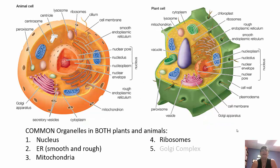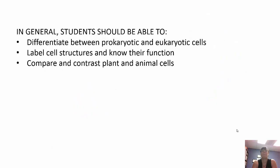Both plant and animal cells share common organelles: the nucleus (control center), smooth and rough ER, mitochondria, ribosomes, and the Golgi complex. You should be able to tell the difference between prokaryotic and eukaryotic cells, know the cell structures and their functions, and compare what plant cells have that animal cells don't, and vice versa.